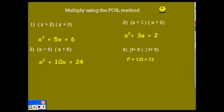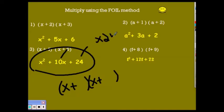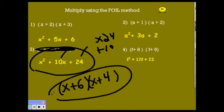I'll do this next one a little bit faster. The first part is easy, especially when all signs are addition. I'm looking for two numbers that multiply together to give me 24 and that add up to 10. I believe those numbers are 6 and 4. The order does not matter. I have just factored this trinomial.